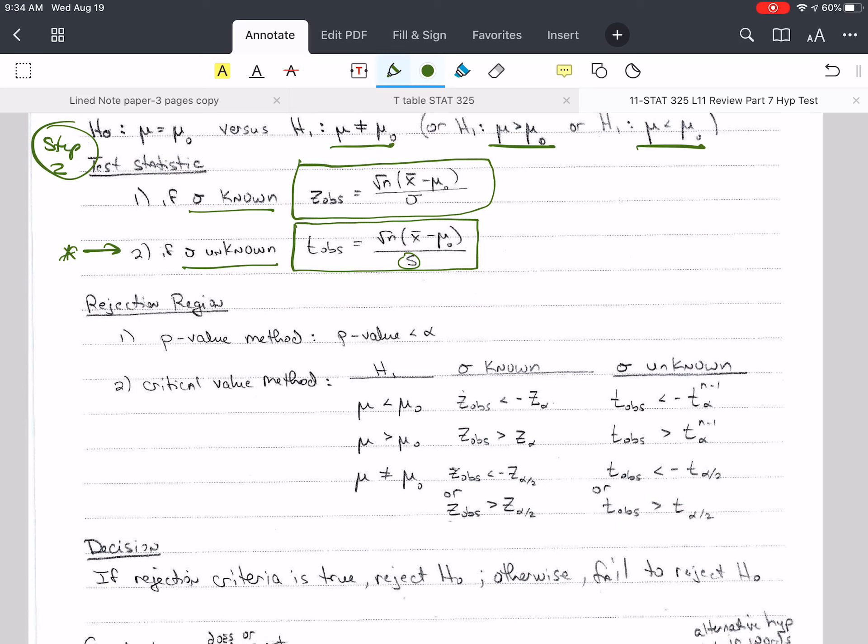And then we have our rejection region, and I've given you this real nice table here so that you can refer to it. So I hope you'll write that down in your notes. So there's two ways to do this.